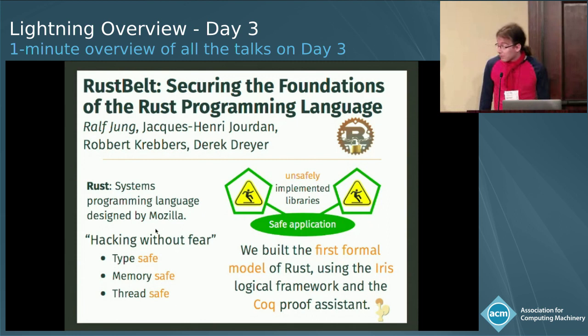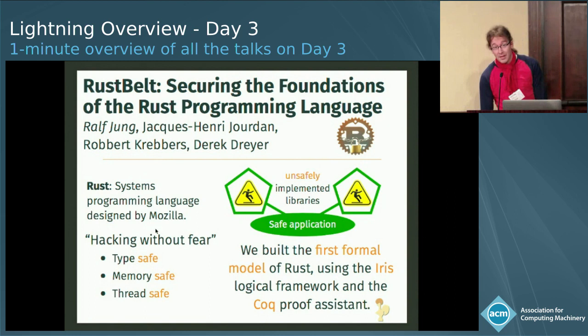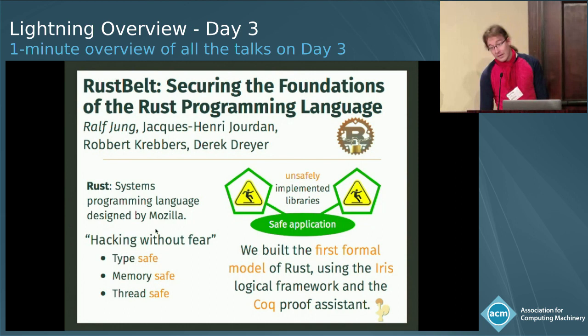I'm going to talk about Rust, Mozilla's new systems programming language with the slogan 'Hacking Without Fear.' It's claimed to be memory safe and thread safe. Moreover, Rust has a focus on letting you build new libraries by writing unsafe code, where the type system is partially disabled, but then you're able to safely wrap this unsafe code in a typed interface so that well-typed clients still can't go wrong. To prove that all these claims are actually true, we built a core Rust calculus formalized in Coq, we have a logical relation for this calculus in Iris, and we proved type safety and safe encapsulation of a bunch of libraries. Come see the last talk at WaterCourt.